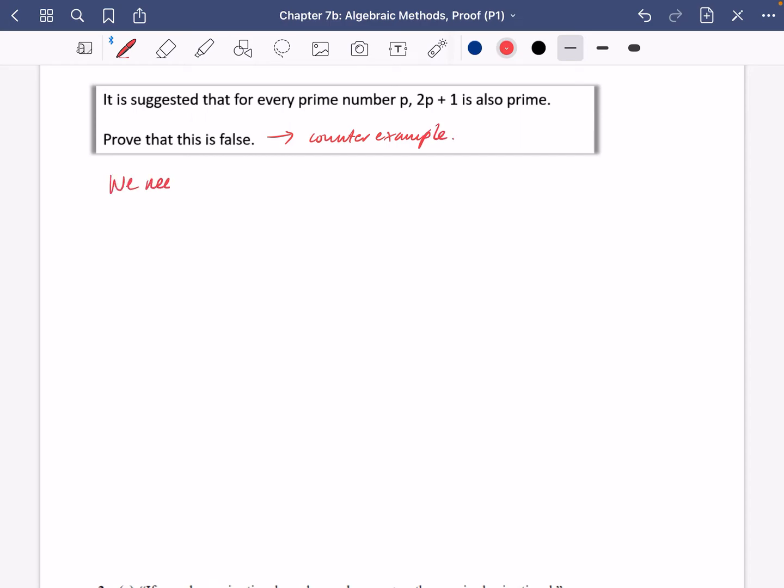We need to find a p such that 2p + 1 is not prime. We're trying to find something that breaks their rule. So maybe you can think of different ones. I know if I try 3, I do 2 times 3 plus 1, that's going to be 7, it's not going to work.